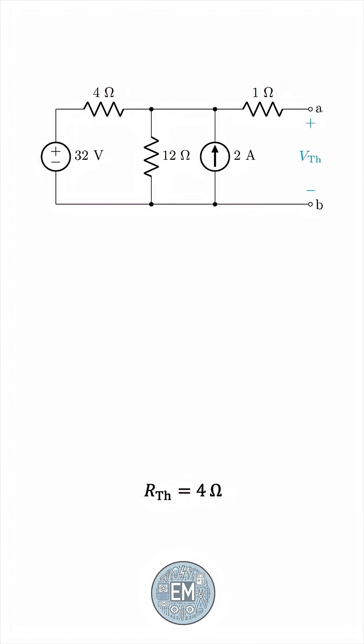We have this voltage source in series with the 4 ohm resistor, so let's replace it with a current source. The 4 ohm resistor would come down in parallel, and the current source would be 32 over 4, which is 8.